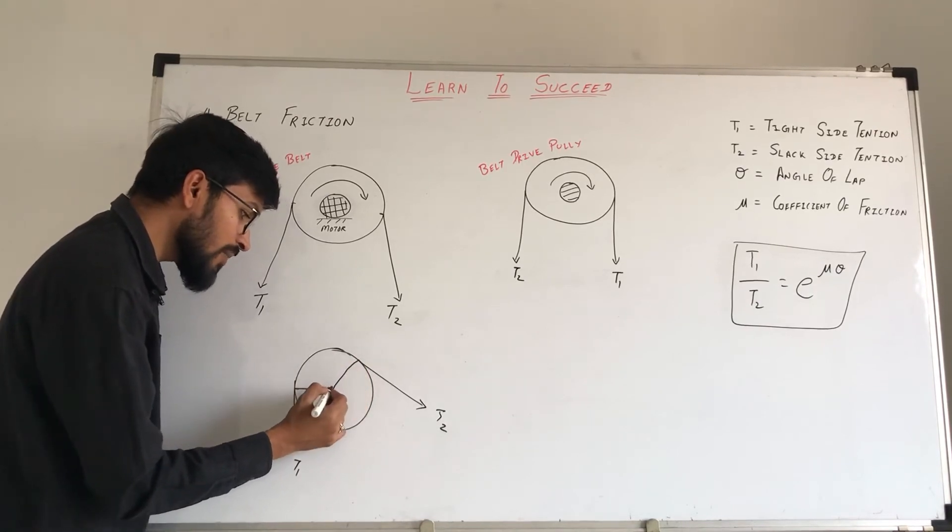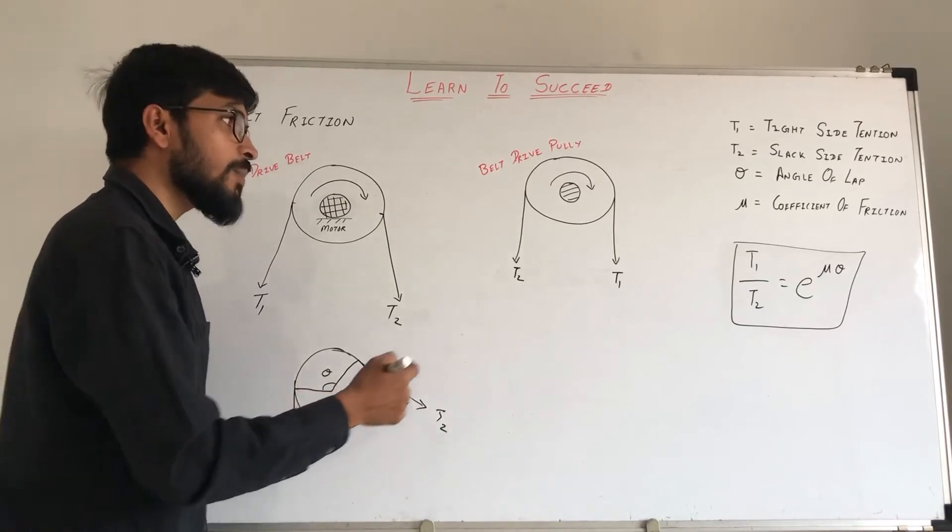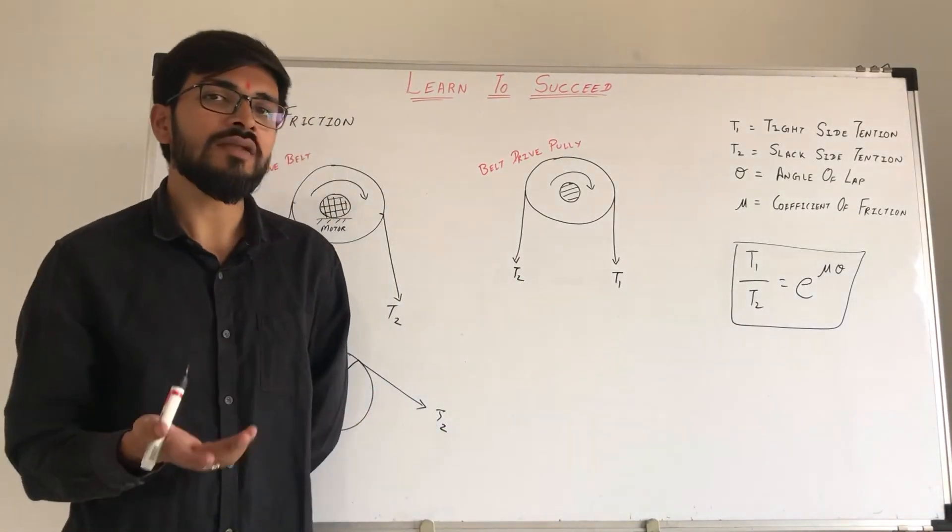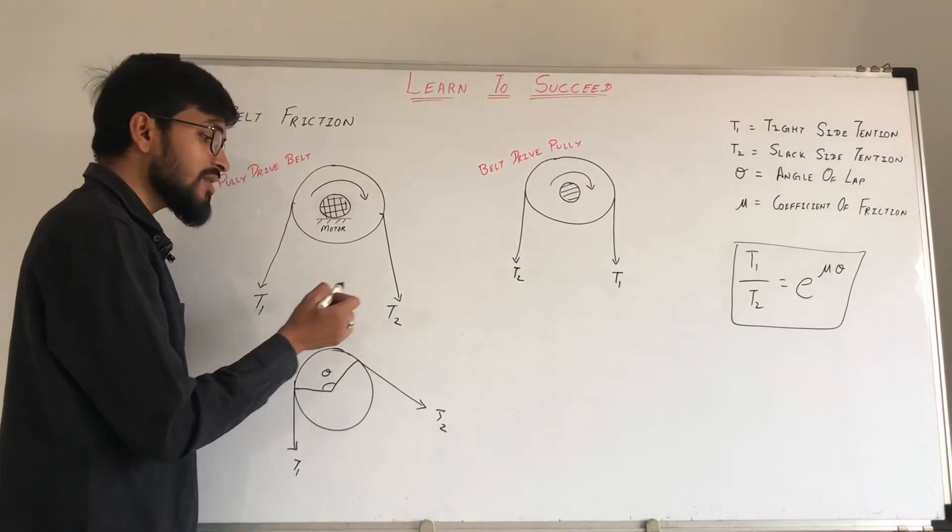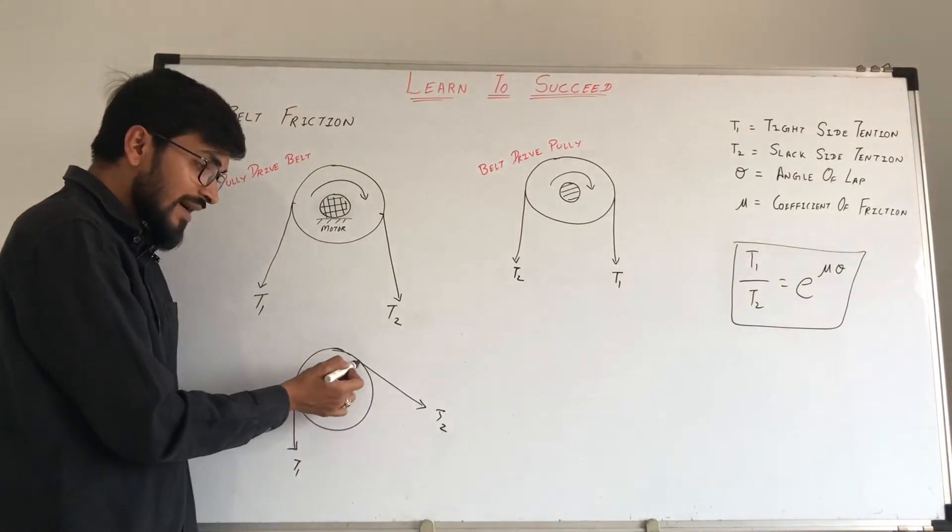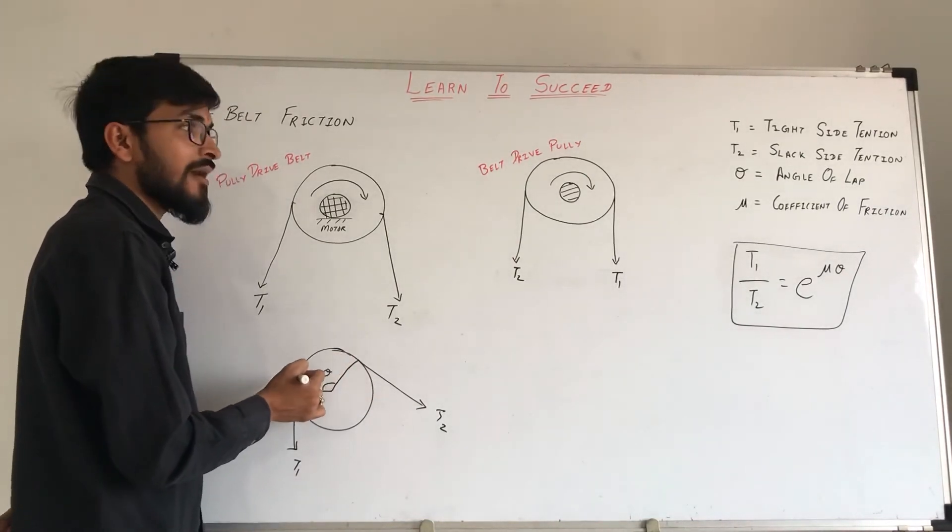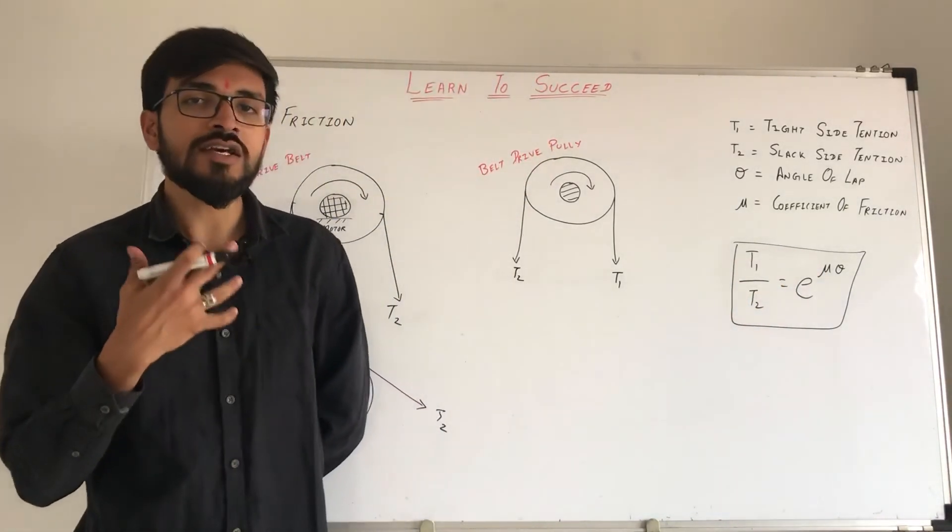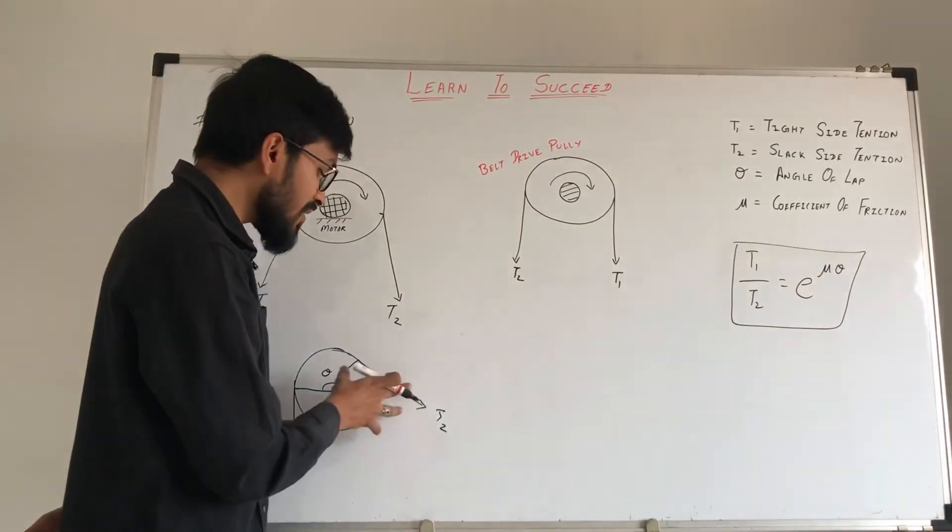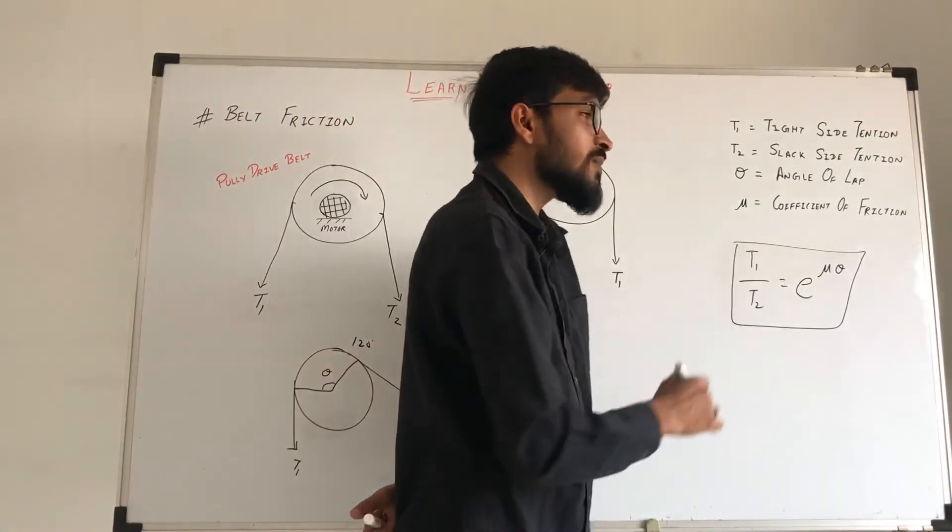Here we have contact. This is the angle of lap, it's theta. T1 is the tight side in the direction. T2 is the slack side. And when contact is complete, here we have the coefficient of friction.